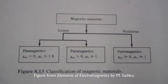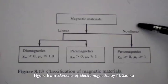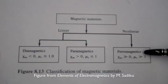Here's a chart from your textbook showing how we can classify materials. Over here we have the non-linear materials referred to as ferromagnetics. These are materials that are strongly attracted to a magnet.